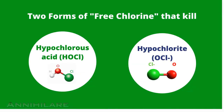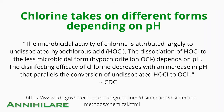Now, there are two types of free chlorine that kill: hypochlorous acid and hypochlorite ions. How do we differentiate between the two? Chlorine chemistry is pretty interesting in how it works. According to the CDC, chlorine takes on different forms depending on the pH of the solution.